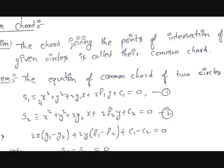Let there be two circles: S1 = x² + y² + 2G1·x + 2F1·y + C1 = 0, and S2 = x² + y² + 2G2·x + 2F2·y + C2 = 0, with centers C1 and C2 respectively. The equation of the common chord is: 2x(G1 − G2) + 2y(F1 − F2) + (C1 − C2) = 0, or equivalently S1 − S2 = 0.